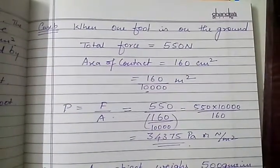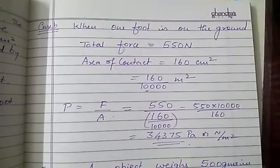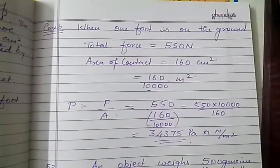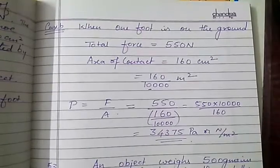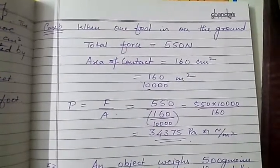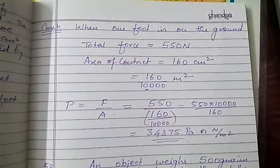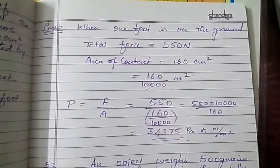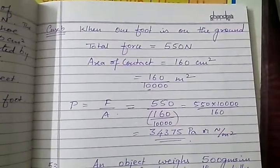If the area of contact is 160 centimeters squared you convert it to meters squared by dividing by 10,000. Then going through the same thing we did earlier, pressure is equal to force by area and the force is the weight of the girl that is 550 Newton by 160 by 10,000 which is equal to 34375 Pascals or Newton per meter squared.